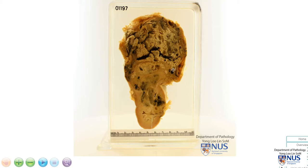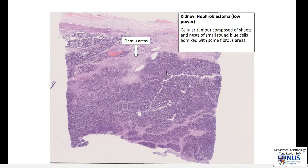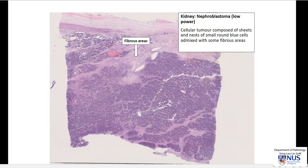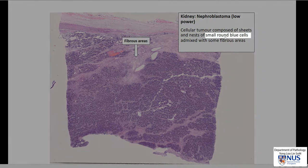Microscopically, they look quite interesting because they can have a triphasic appearance. These are actually immature tumors that try to recapitulate the developing nephron. Here is an example at low power — we can see a very blue appearance, and this is because it is composed of cells with very high nuclear-to-cytoplasmic ratios. This is a classical example of a small round blue cell tumor, and these are often the immature tumors seen in children.